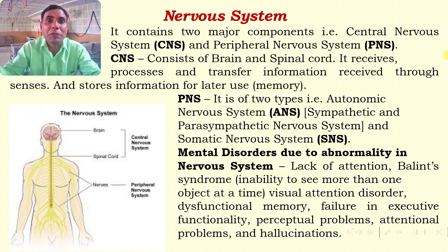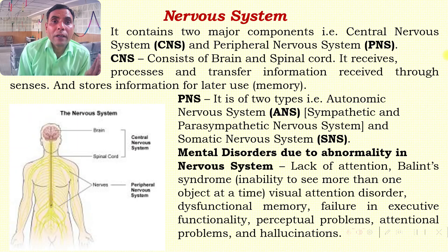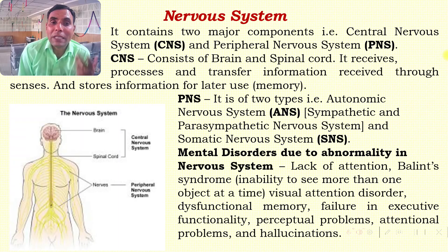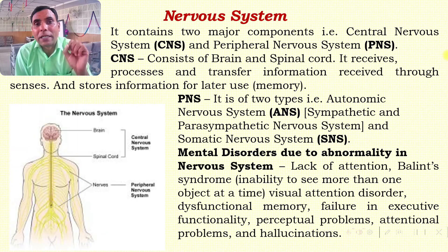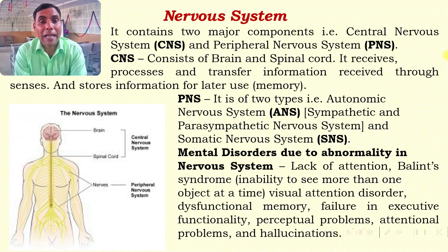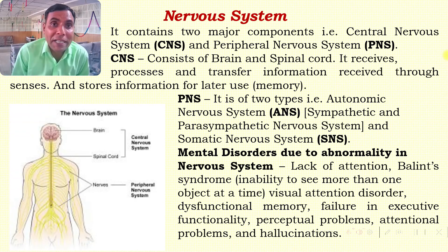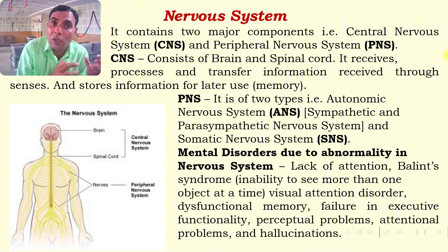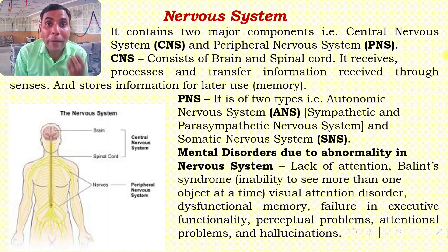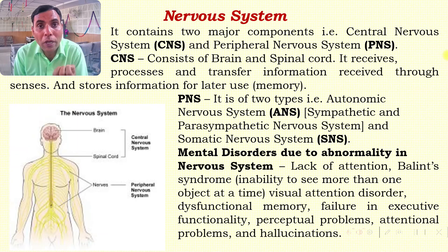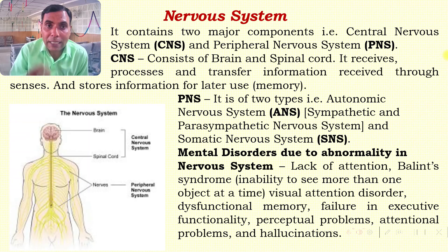The nervous system is the most important body system for receiving, processing, and transmitting information. It is of two types: the central nervous system, which contains the brain and spinal cord, and the peripheral nervous system, which contains the autonomic and somatic nervous systems. Disruption in the nervous system can lead to attention-related problems, Balint syndrome — where an individual finds it difficult to focus on more than one object at a time — as well as memory issues, perceptual issues, and hallucinations.